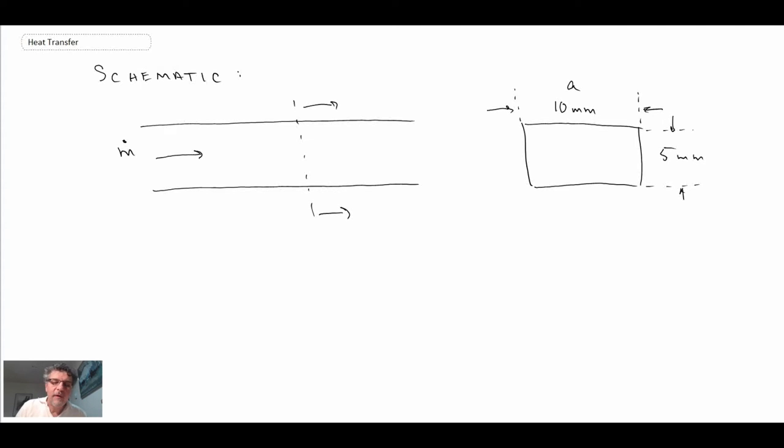So that would be a cross-section of the duct—rectangular cross-section. Now in terms of the analysis, we know that this is non-circular geometry, we're dealing with laminar flow, and we have constant axial wall temperature.